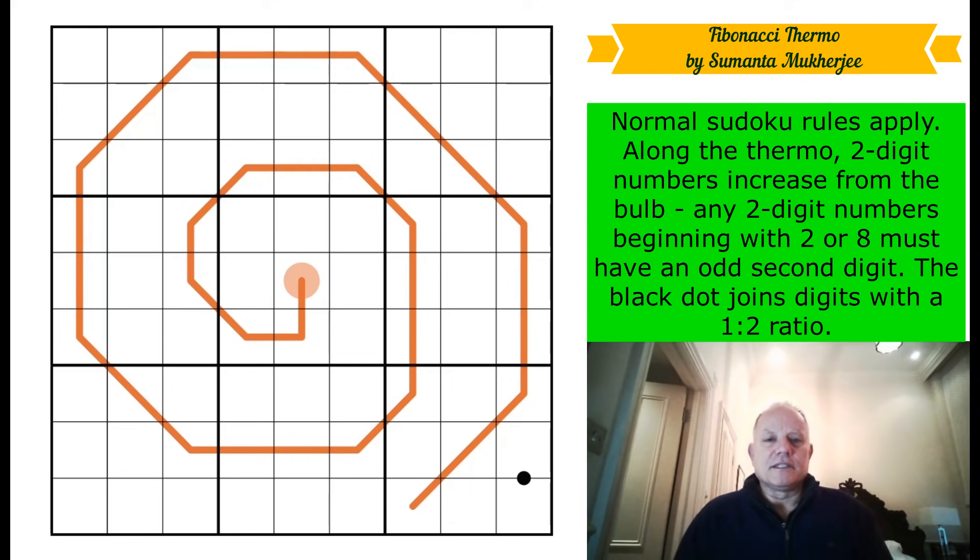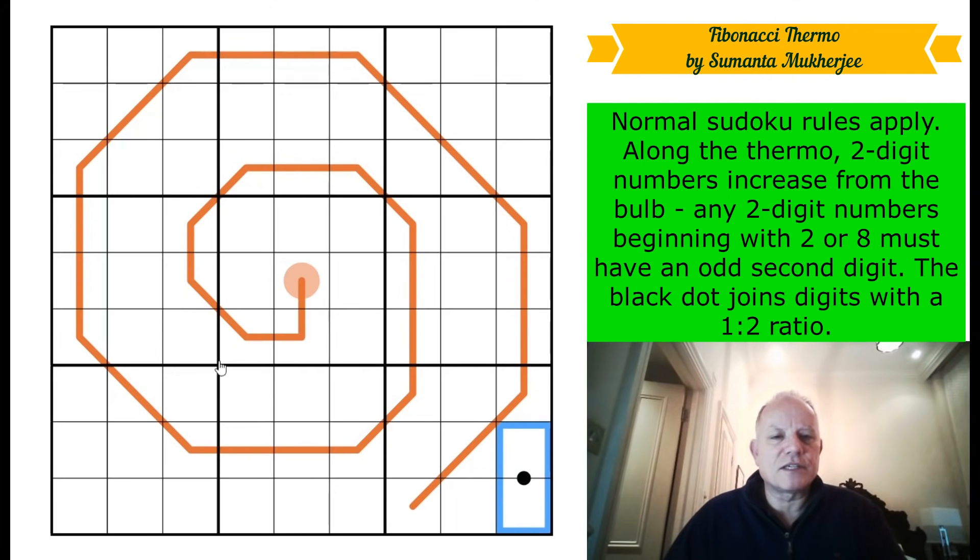Anyway, this is a discovery, I reckon. You can see why this is called a Fibonacci Thermo. If you're familiar with the Fibonacci Spiral, the golden ratio, etc., this is a very elegant spiral in the grid. And it's all we get. We get one black dot, we get this spiral, and a rule.